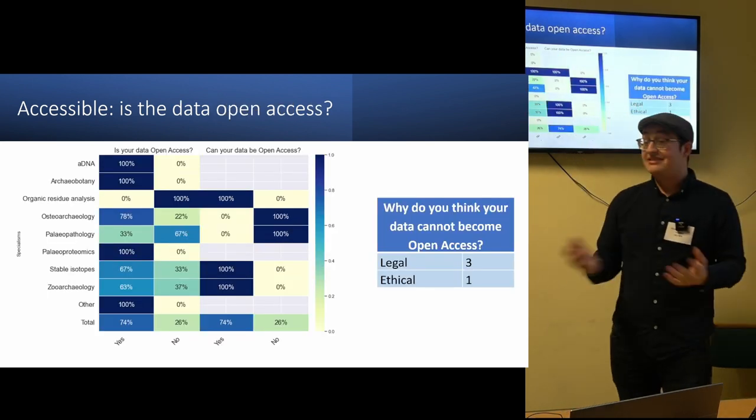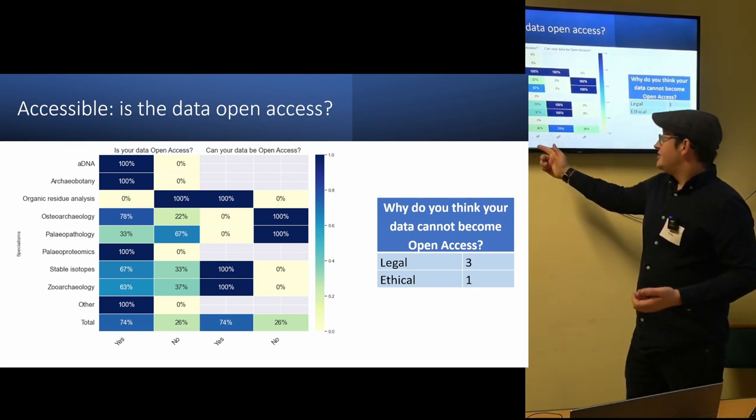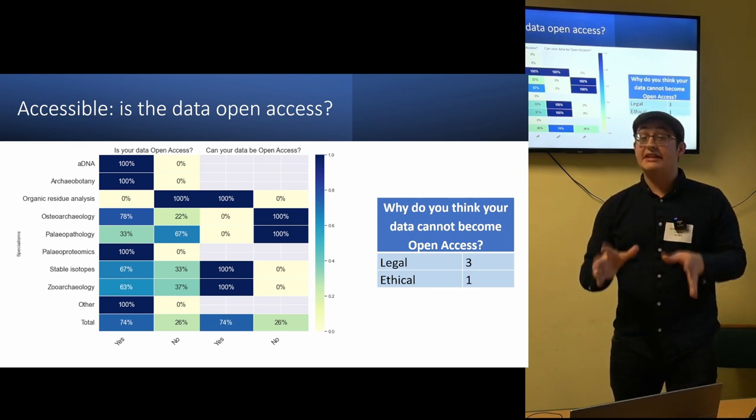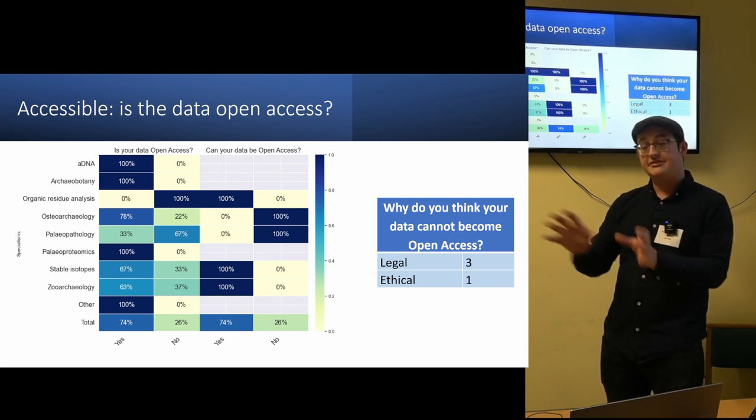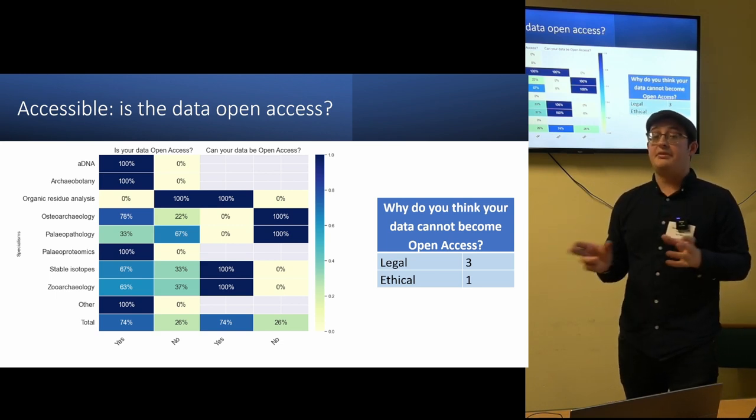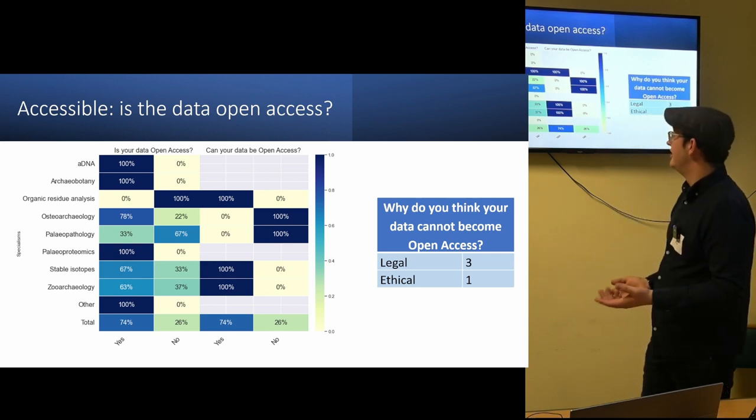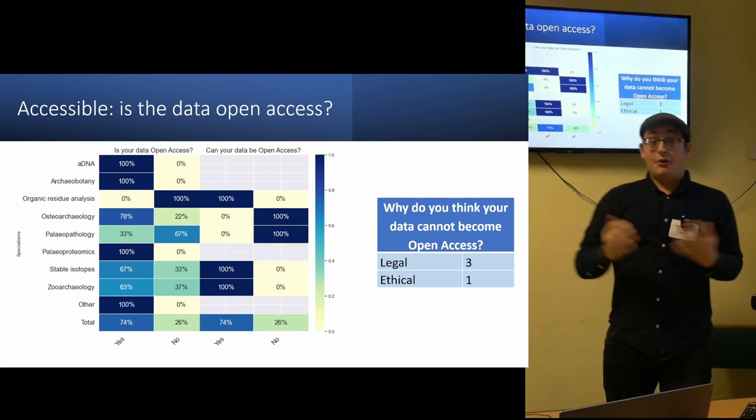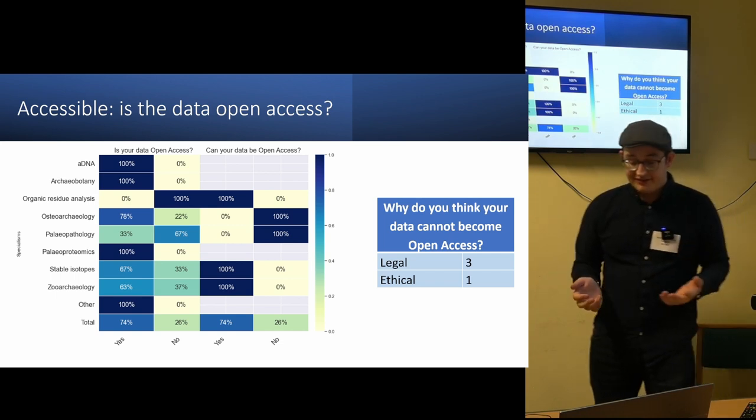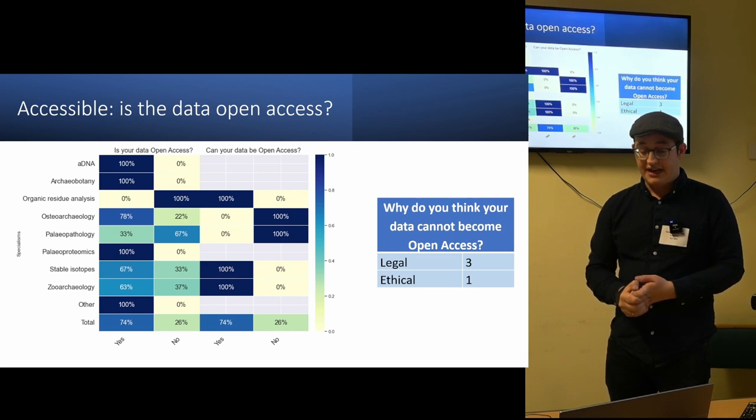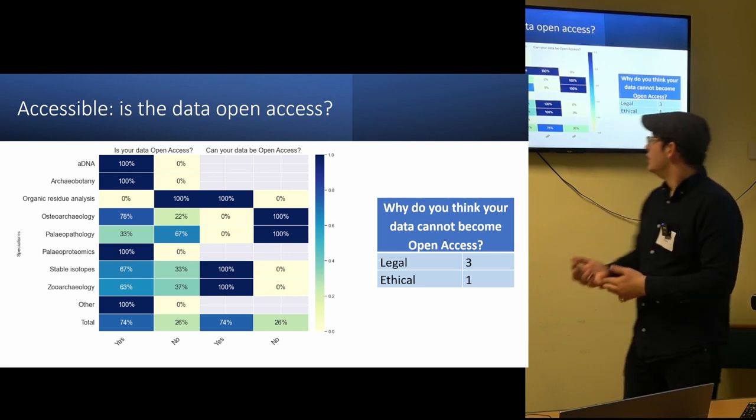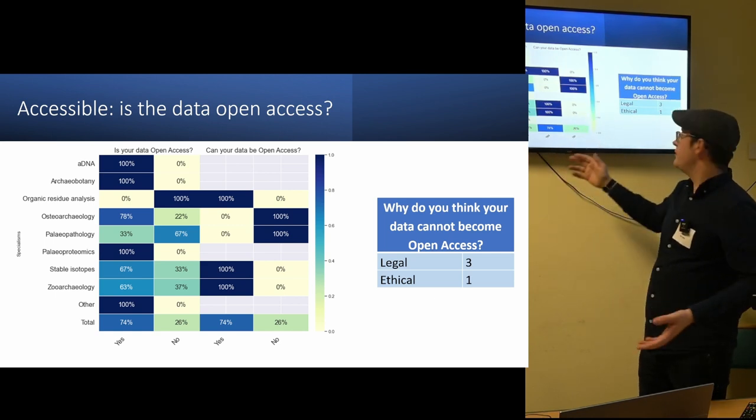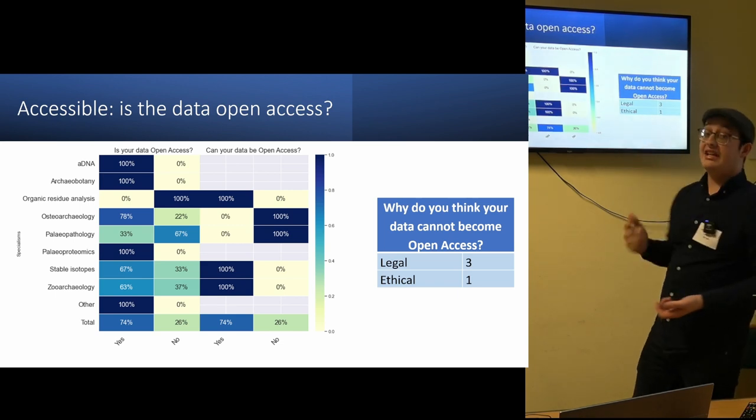In terms of accessibility, is the data actually open access? Well, it seems to suggest that quite a lot of people are making the data open access. And I'll have to stipulate here, open access is definitely not a part of the FAIR data principles. They encourage it, but they are different things. However, by encouraging data to be open access, it really can help the FAIR data principles. And as you can see, ancient DNA, archaeobotany, paleoproteomics, and also other, all of their data is made open access, which is brilliant. But when people were asked about whether their data could be open access, when they said that their data currently isn't, it was shown that quite a lot of the data can be made more open access in the future. And there were some instances where people said it couldn't be, and the reasons why are for legal reasons and ethical reasons.